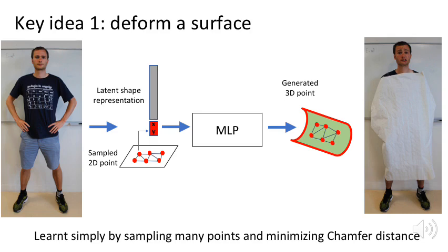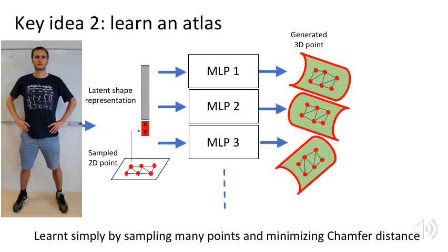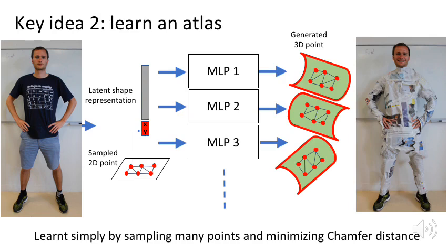To solve this issue, instead of learning a single deformation, we learn multiple deformations to cover the generated object. And this works much better in practice. This actually goes back to the topological definition of a surface as being everywhere similar to a 2D patch. It's homeomorphic to R2. We show in the paper that in fact, the representation we learn is similar to an Atlas. This is our final setup.